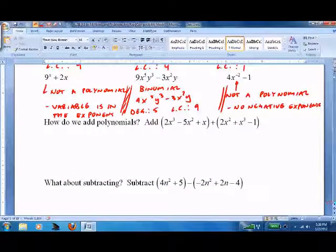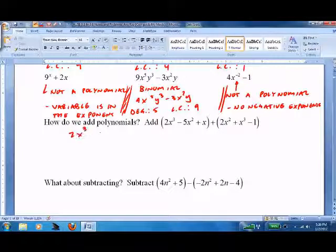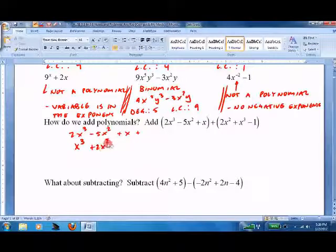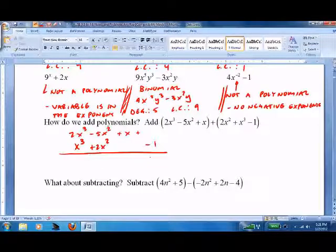So how do we add them? We'll just line them up. Space the problem out if you can: 2x to the third, then minus 5x squared, then plus x, and I'll leave a blank where the number would go. Then we line up the next ones underneath: x third plus 2x squared minus one. Then we just add down. Two plus one is three x to the third, negative five plus two is negative three x squared, plus x minus one. And that's it. There's really no way to check these problems, so you've got to make sure you're doing them right on the first try.